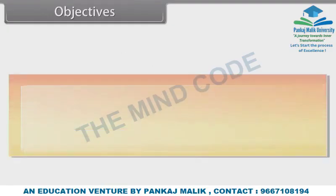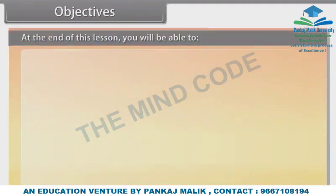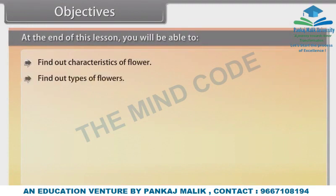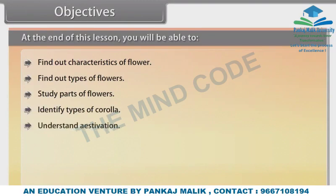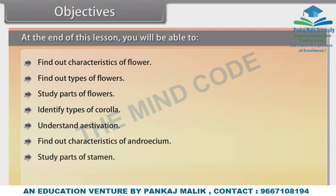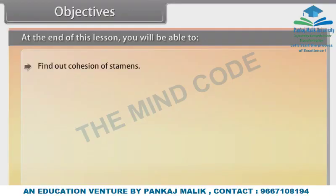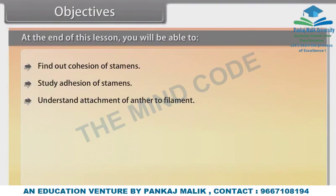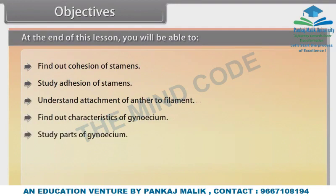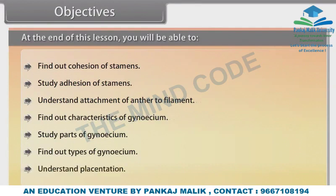At the end of this lesson, you'll be able to: find out characteristics of flower, find out types of flowers, study parts of flowers, identify types of corolla, understand estivation, find out characteristics of androsium, study parts of stamen, find out types of androsium, study cohesion and adhesion of stamen, understand attachment of anther to filament, find out characteristics and parts of gynosium, find out types of gynosium, and understand placentation.